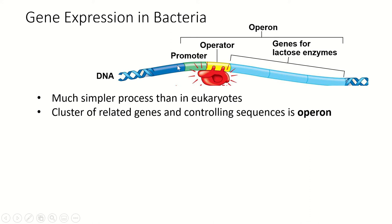Imagine that this is a strand of DNA inside a bacterium that can eat milk — it can break down lactose, the sugar found in milk. There are several genes involved in creating the enzymes needed to break down lactose. The control for all of these genes is in one place called an operator, and there's a spot called a promoter just upstream from that. Downstream are all the related genes together, and this whole thing is called an operon. This is called the lac operon because it's involved in lactose.